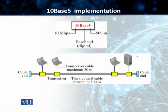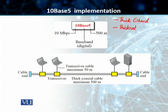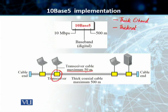The first implementation is 10Base5, also called ThickEthernet or ThickNet. The name 'ThickNet' comes from the size of the cable — the coaxial cable used is pretty big and too stiff to bend with the hands. It was the first Ethernet specification to use a bus topology with an external transceiver, as you can see. We have the cable end, the transceiver, and the transceiver cable connecting a station to the transceiver. The maximum length of that cable is 50 meters, and the range of this implementation is 500 meters.